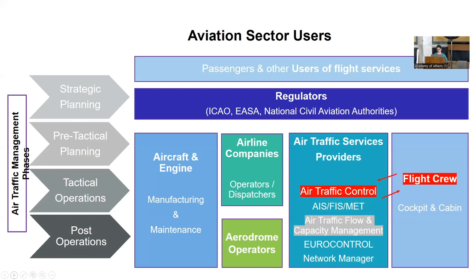On the right we see a minimal description of who the aviation sector users or actors are. Each one is involved at a different phase and in a different way when coping with atmospheric hazards related to aerosols. For example, aircraft and engine manufacturing provides information on tolerance limits of different aircraft types, whereas air traffic flow and capacity management is responsible for balancing air traffic demand and airspace capacity, which is particularly affected when adverse meteorological conditions occur.